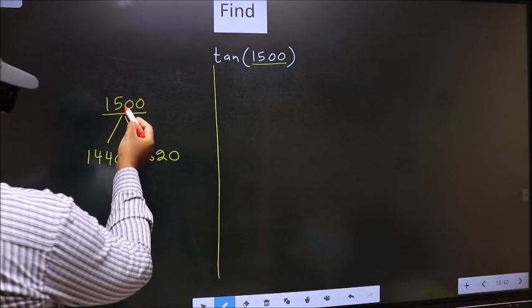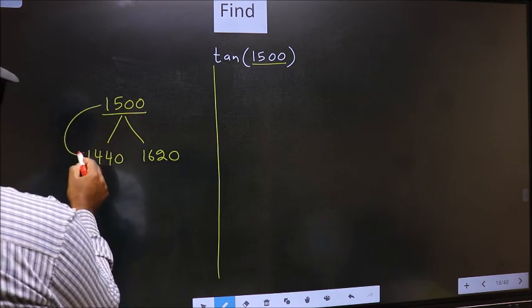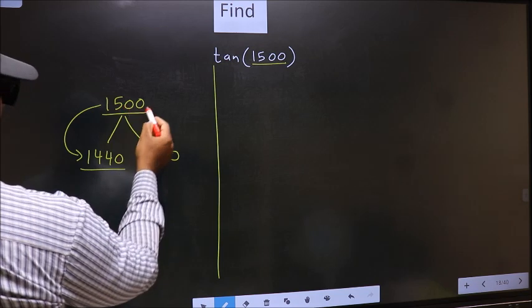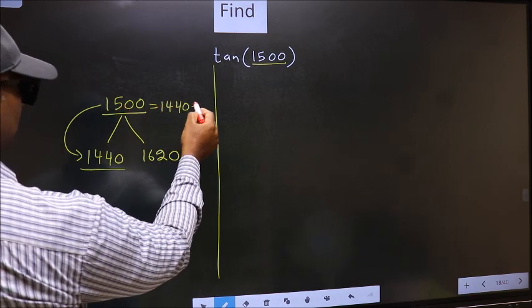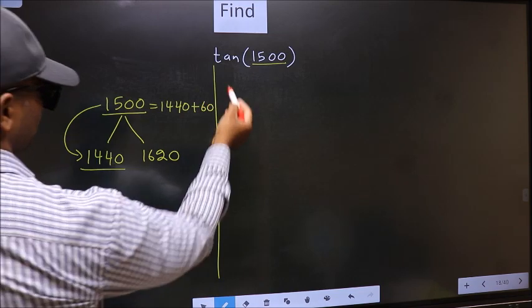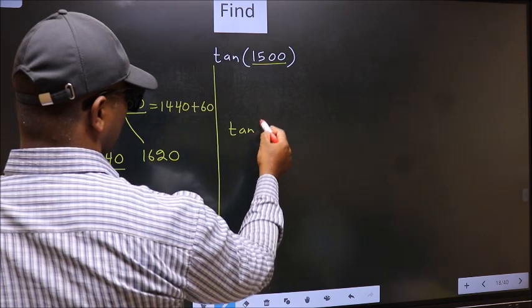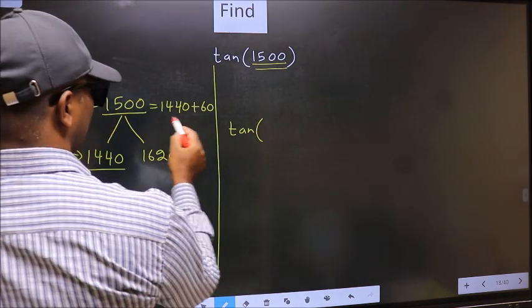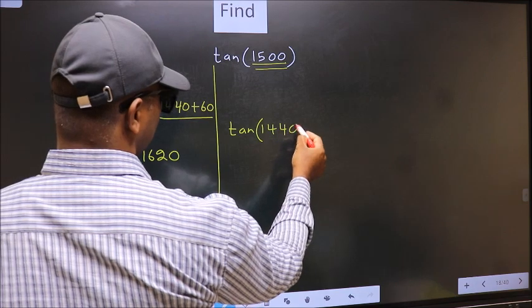Next, 1500 is close to which number? This is close to 1440. So in place of this, now we should write 1440 plus 60. So this will become tan - in place of this now we should write 1440 plus 60.